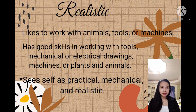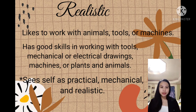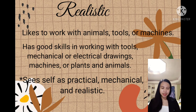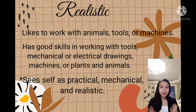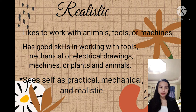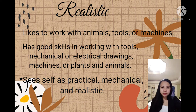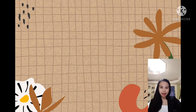Realistic: these are people who like to work with animals, tools, or machines. They have good skills in working with tools, mechanical or electrical drawings, and practical things. They see themselves as practical, mechanical, and realistic. They are considered doers who like to operate machines. Their field of work commonly requires strength and mechanical ability — those under realistic are found in fields that require being hands-on.